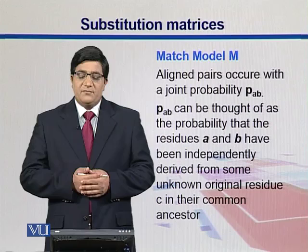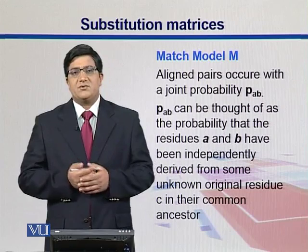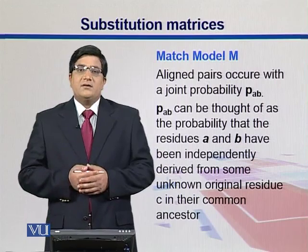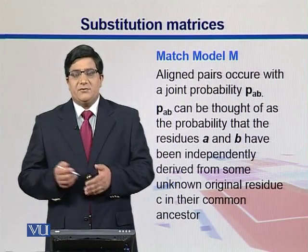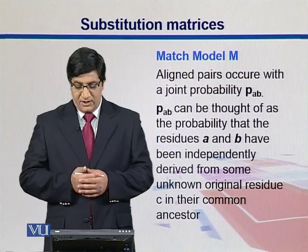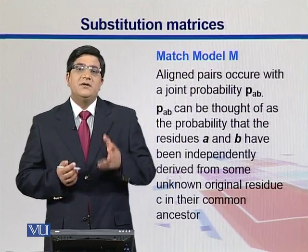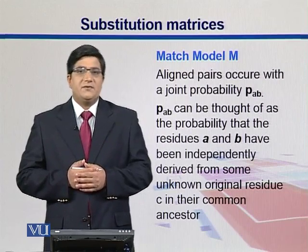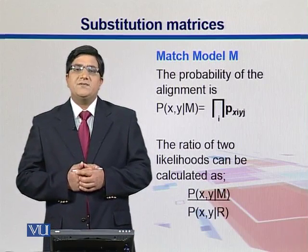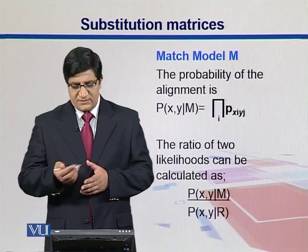In the match model, we look at aligned pairs and try to correlate them — it's not by chance but they are actually related to one another. Here we use their joint probability of A and B. Residues A and B have been independently derived from some unknown original residue C in their common ancestor. So we say these two residues are correlated, and the probability can be their joint probability. This is the match model.